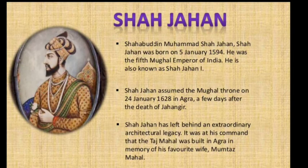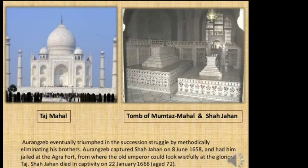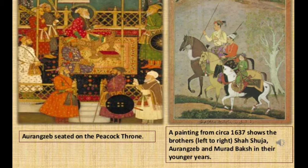Shah Jahan's full name was Shahbuddin Muhammad Shah Jahan. He was born on 5th January 1594 and was the fifth Mughal emperor of India. He assumed the Mughal throne after the death of Jahangir in 1628 and left behind an extraordinary architectural legacy — the Taj Mahal, the tomb of Mumtaz Mahal, being the finest example. Aurangzeb was Shah Jahan's son, born on 24th October 1618 in Madhya Pradesh. He wrested India's crown from his father before the end of June 1658 and was so power-hungry that he kept his own father in prison.